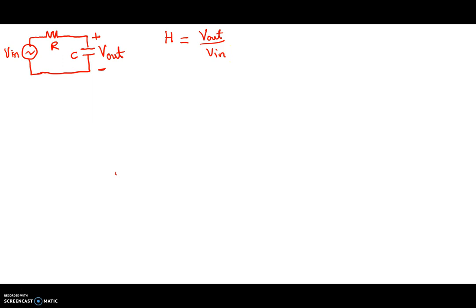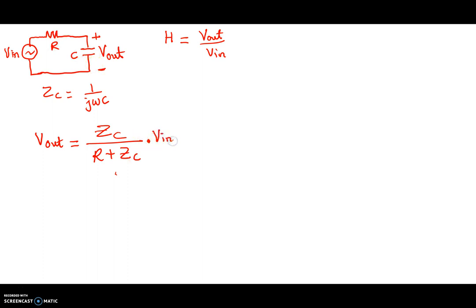Now let's take a look at this circuit. We see R and C in the frequency domain. The capacitor has an impedance equal to 1 over jωC, and the impedance of the resistor is simply R. Using voltage divider, V_out can be written as the impedance of the capacitor divided by the resistor plus the impedance of the capacitor — because these two are in series — times the input voltage.